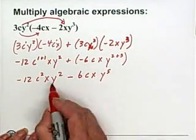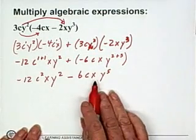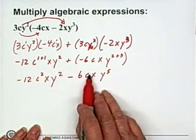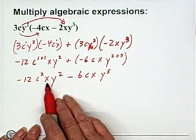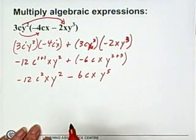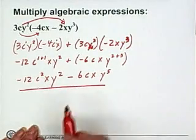Now we look at our terms. We say to ourselves, do we have like terms here? We do not. This is a c². This is a c to the 1. We have x, y². These are not like terms. So we cannot add them. So this is our answer.